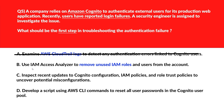Option B says: use IAM Access Analyzer to remove unused IAM rules and users from the account. Deleting unused IAM rules doesn't address login failures and could risk removing required permissions. It's incorrect. Option C says: inspect recent updates to Cognito configuration, IAM policies, and role trust policies to uncover potential misconfiguration. Reviewing recent changes helps pinpoint misconfigurations or permissions updates that may have disrupted authentication flows. Let's keep this.